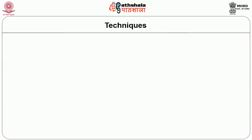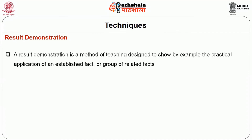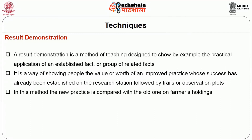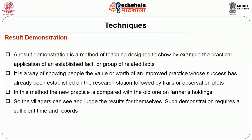Another important method under individual contact is result demonstration — a method of teaching designed to show by example the practical application of an established fact or group of related facts. It shows people the value or worth of an improved practice whose success has already been established on the research station, followed by trials or observation plots. The new practice is compared with the old one on farmers' holdings so that villagers can see and judge the results for themselves.